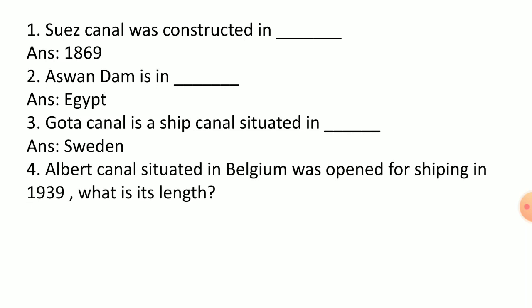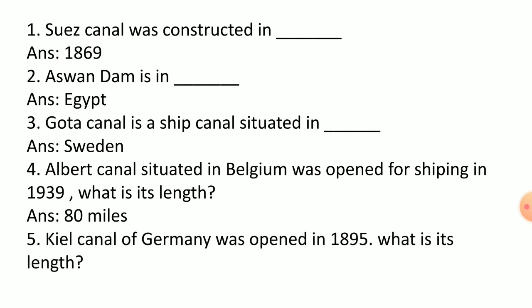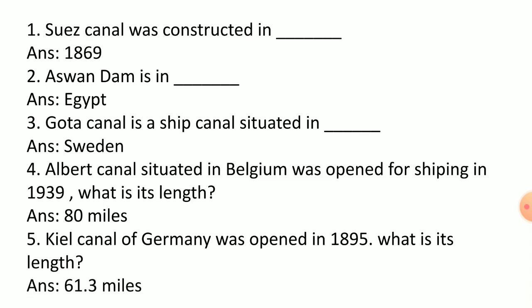The Albert Canal, situated in Belgium, was opened for shipping in 1939. Its length is 80 miles. The Kiel Canal of Germany was opened in 1895. Its length is 61.3 miles.